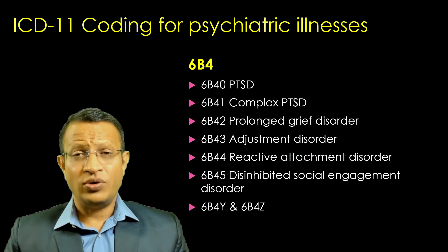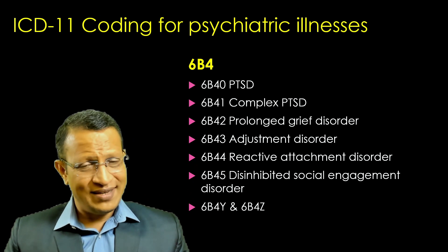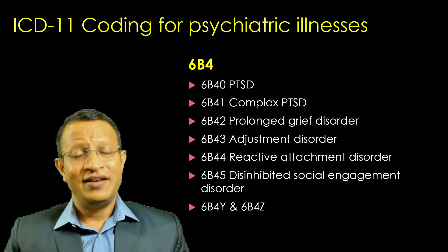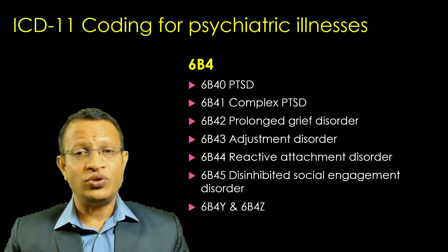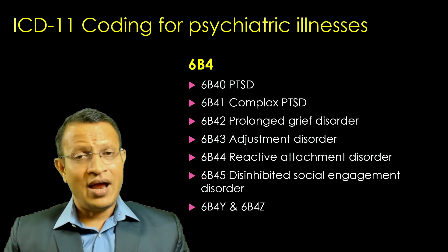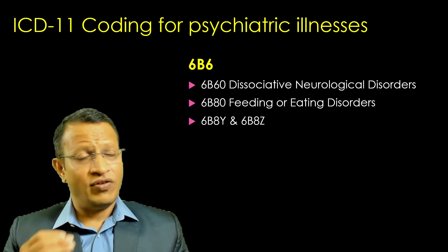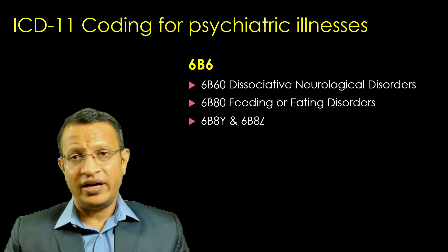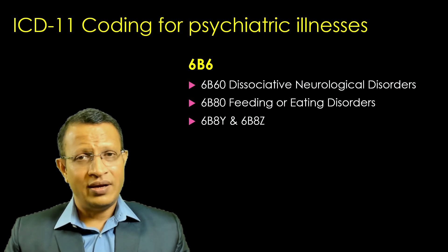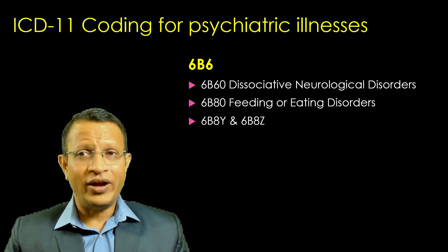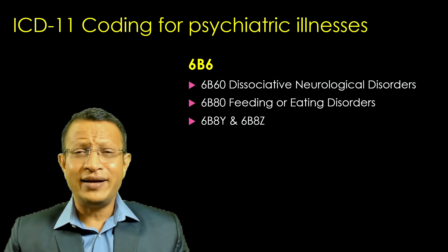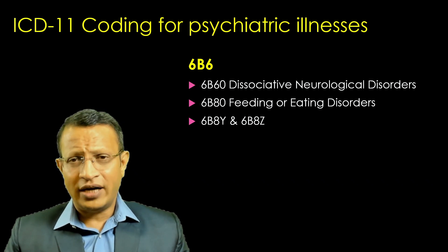Moving to 6B4, it is for trauma-focused disorders. PTSD, complex PTSD, prolonged grief disorder, and adjustment disorder are brought here. Further, reactive attachment disorder and disinhibited social engagement disorder have been brought in based on various research findings. Moving to 6B6, it covers dissociative neurological disorders — what was earlier considered as hysteria. 6B80 covers feeding or eating disorders, including something newly called 'feeding disorder.'